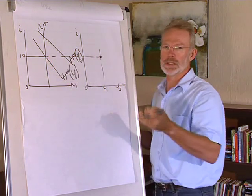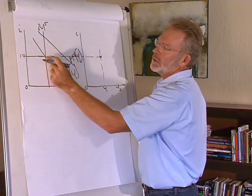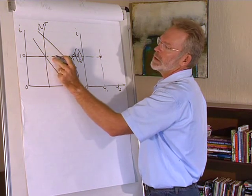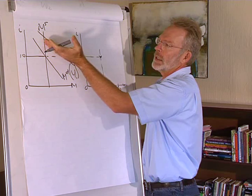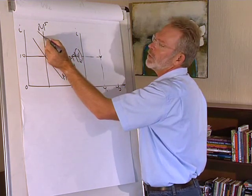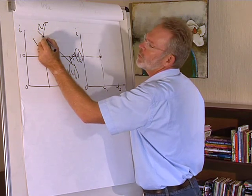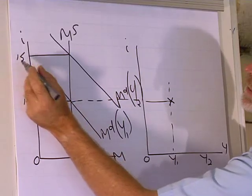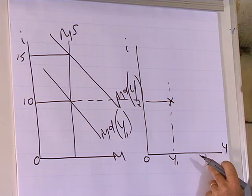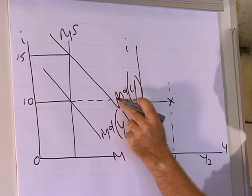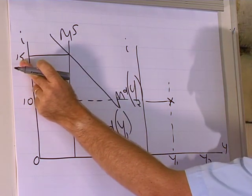To eliminate this excess demand for money, bonds will be sold. If we sell bonds, the price of bonds will decrease and the interest rate will increase, leading to a new equilibrium at a higher interest rate where demand for money equals supply of money, say 15%. The output level Y2 thus led to an increased demand for money and a higher interest rate.